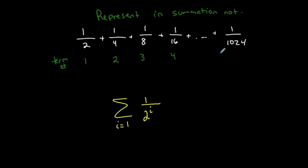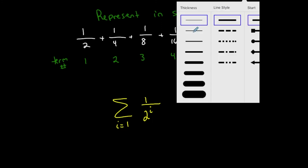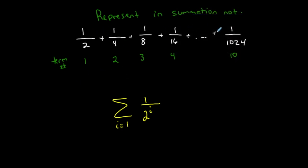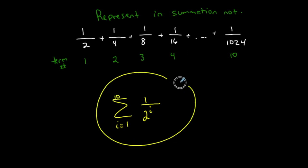Now I need to figure out which term number corresponds to 2^10 equals 1024 in the denominator. Two to the tenth power is 1024, so this is the tenth term. That means when writing my summation notation, I start at i=1 and end at 10, using the formula 1 over 2^i. That's my summation notation for this sum.